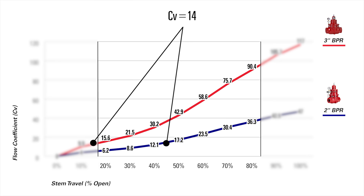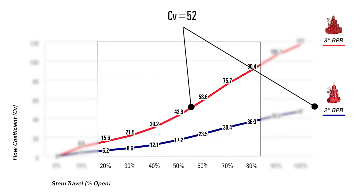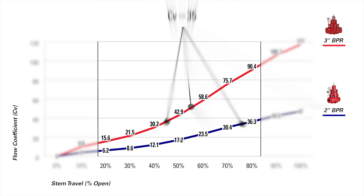If you calculated a CV value of 52, you would want to choose the 3-inch valve, because in the 2-inch, 52 would fall outside of our recommended range. If you calculated a CV value of 35, this falls in range for both valves. In this case, we would recommend the 3-inch because it falls closer to the middle of the flow curve.